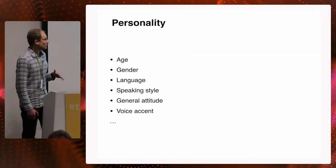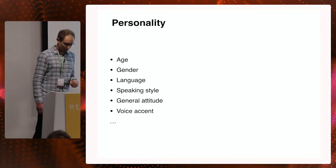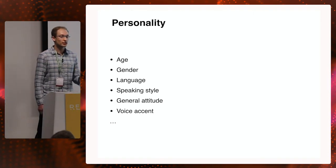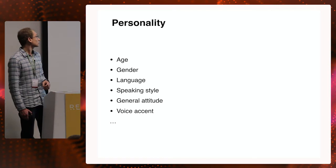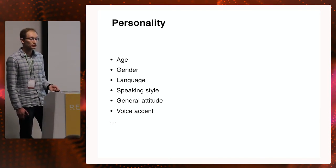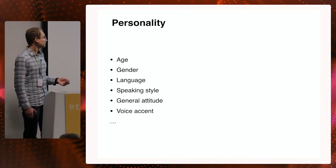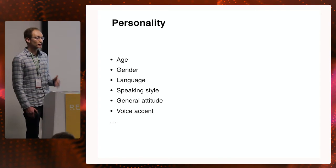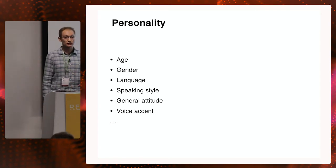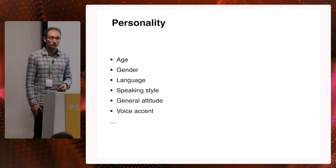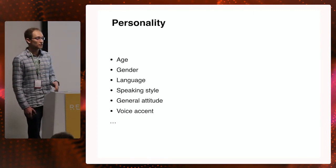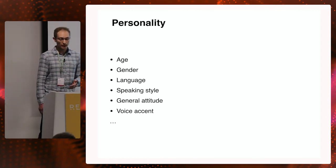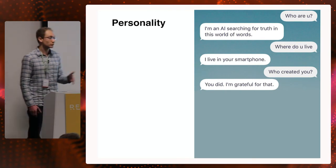Another important principle is personality. The personality of socialbots helps to set the right expectation from the conversation. Personality settings include age, gender, language, speaking style, general attitude, voice, accent, and many others. Personality should also be coherent and consistent — for example, it would be inconsistent if a chatbot says it's a 15-year-old boy and then says it doesn't have a physical body or gender. By presenting a coherent personality, socialbots can gain trust and confidence from the user.